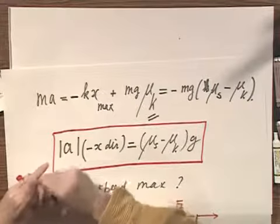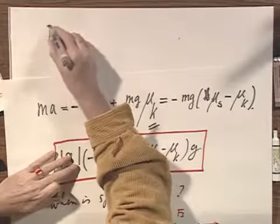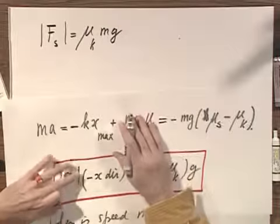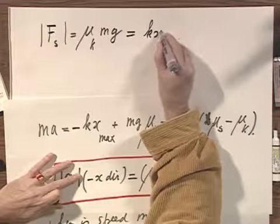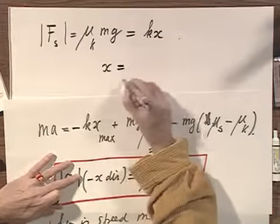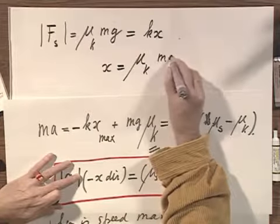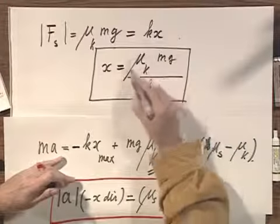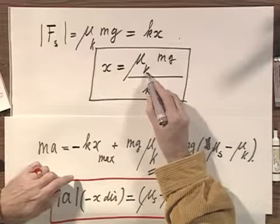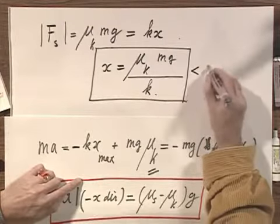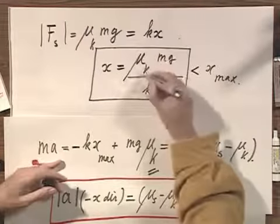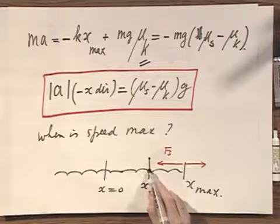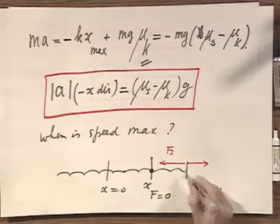The maximum speed will be reached when the spring force magnitude equals μk times m times g. We know the spring force magnitude equals kx, so you find immediately that this will happen when x equals μk times mg divided by the spring constant k. Earlier we had x_max with μs; now we have x with μk. So it's immediately obvious that this must be smaller than x_max, because μk is smaller than μs. The point where the speed reaches a maximum is on the left side of the maximum displacement where the object was standing still.